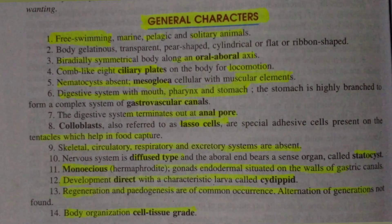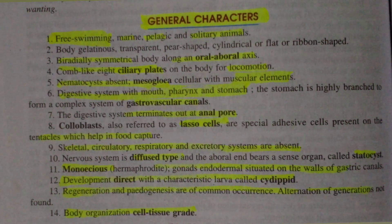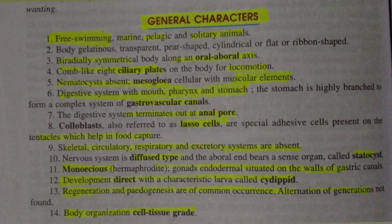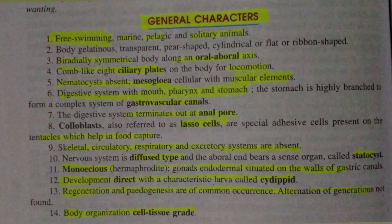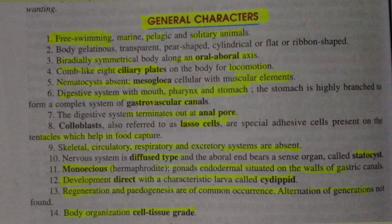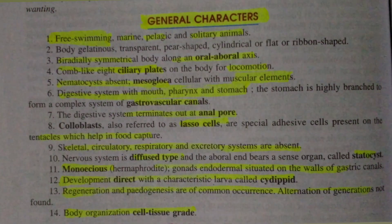Regeneration and paedogenesis are of common occurrence. Regeneration means that if an organism's body is cut, the cut part forms new individuals. Paedogenesis is the phenomenon related to neoteny — if the reproductive organs develop precociously while metamorphosis is delayed, but reproductive organs are developed, such phenomenon is known as paedogenesis.